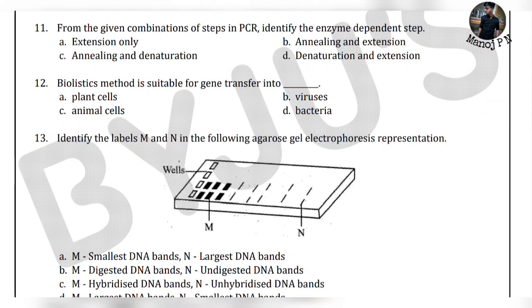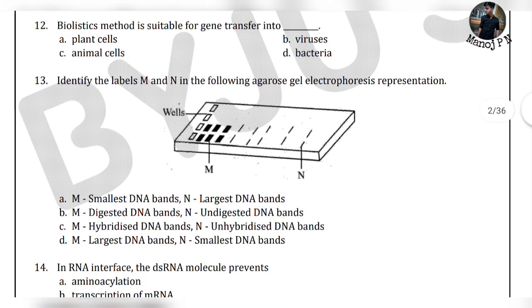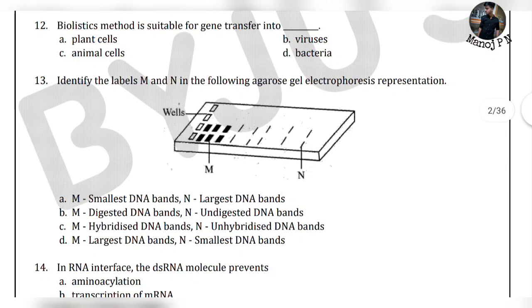Biolistics method is suitable for gene transformation into — with options plant, virus, animal, bacteria. It is very simple: plant. Biolistics — this method is used by plant cells. For the 13th question, take a tick mark.